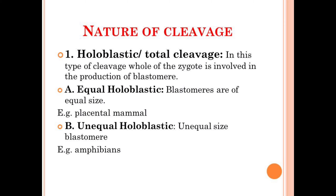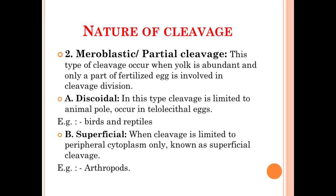We will now discuss the nature of cleavage. The first type is holoblastic or total cleavage. In this type, the whole product of fertilization, i.e., the zygote, is involved in the production of blastomeres. The whole zygote divides and leads to production of blastomeres. The blastomeres formed can have different sizes: equal holoblastic, where blastomeres are of equal size — for example, placental mammals — and unequal holoblastic, where blastomeres of unequal size form, as in amphibians.